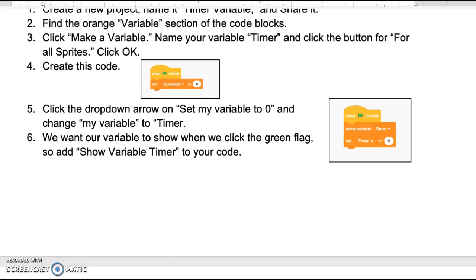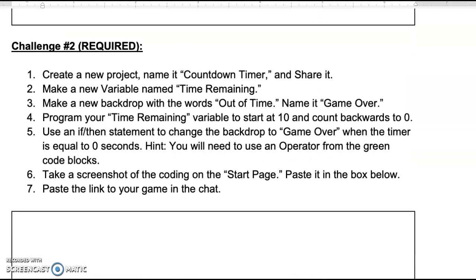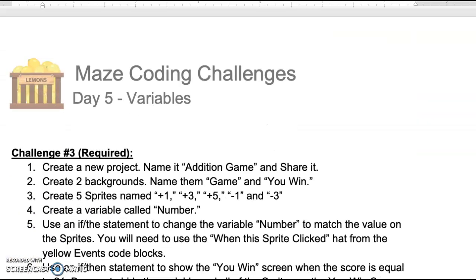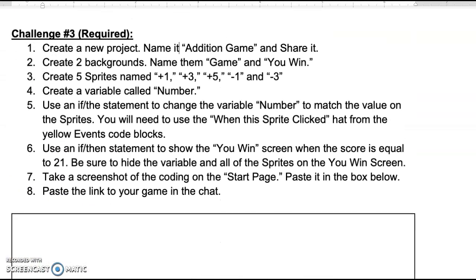Challenge number three is an addition game. We are going to make sprites that have values: plus one, plus three, plus five, minus one, and minus three. We're going to have the user click on these numbers in order to reach a score of 21. And then once the score of 21 is reached, the screen will change to 'you win.'